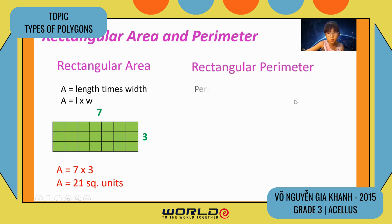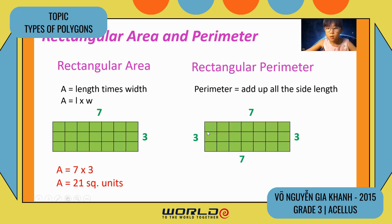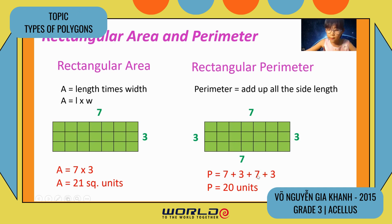Next, rectangular perimeter. Perimeter is the sum of all the side lengths. Perimeter equals seven plus three plus seven plus three. Perimeter is equal to 20 units.